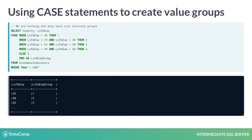The case statement is a good way to arrange data into smaller groups. This is a common technique for data science. This example shows how to create groups, which are often called bins, so that we can evaluate larger groups of ages rather than discrete values. The case statement looks at each value of the age, and depending upon the value, substitutes the age in the life expectancy column with one of five numbers representing groups of ages.